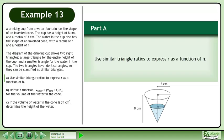The diagram of the drinking cup shows two right triangles, a large triangle for the entire height of the cup and a smaller triangle for the water in the cup. The two triangles have identical angles, so they can be classified as similar triangles. In part A, use similar triangle ratios to express r as a function of h.